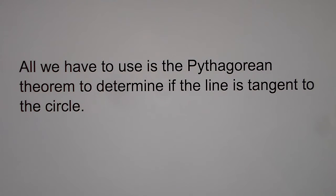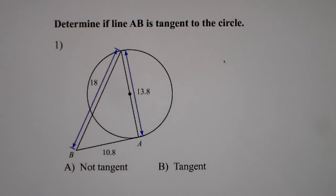And to do that, we're going to use the Pythagorean theorem. You remember that from before, that's A squared plus B squared equals C squared. So let's practice that.